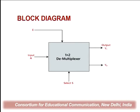Looking at the block diagram: it is a 1×2 demultiplexer, so input is A, there is one selection line S, and 2 outputs Y1 and Y0, along with an enable input E. That is a simple block diagram and we have already discussed the functioning of each one of these.